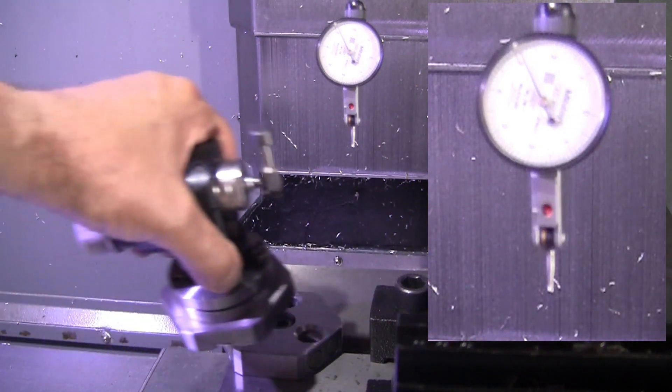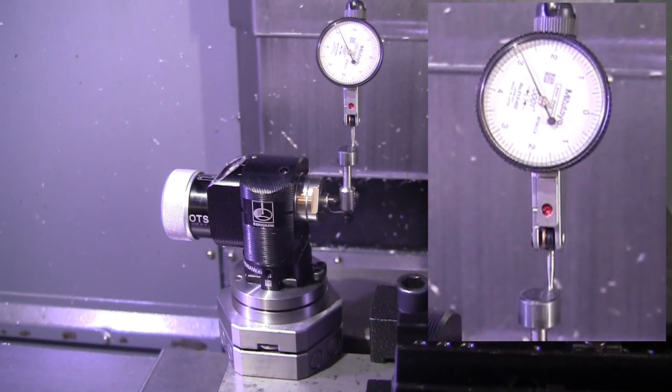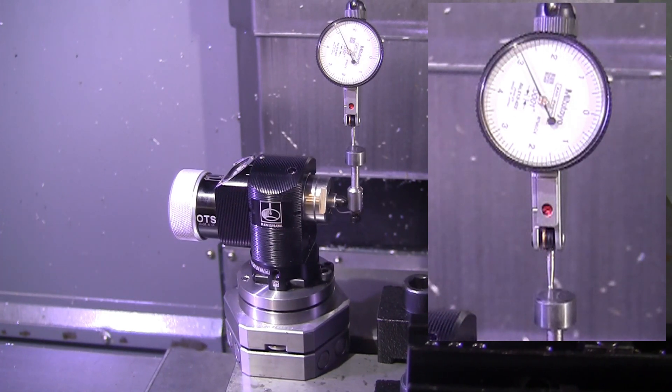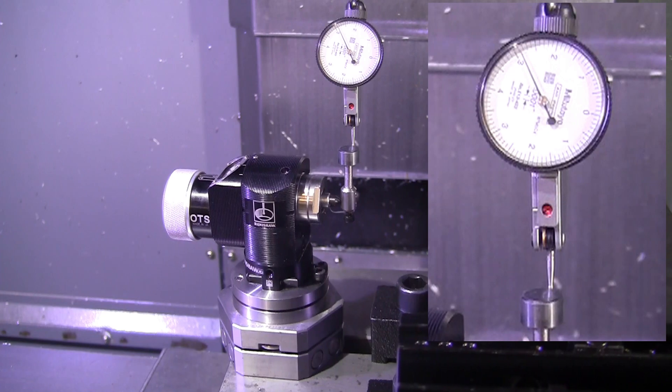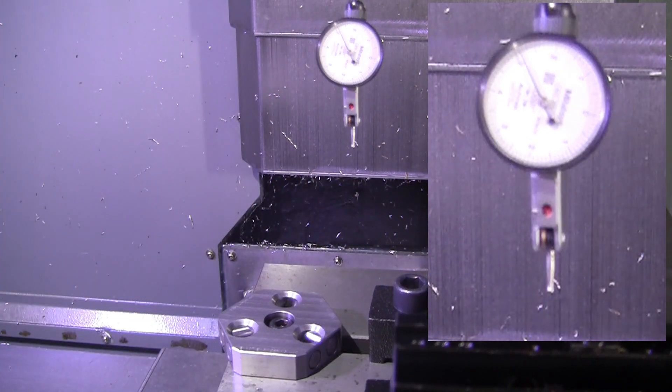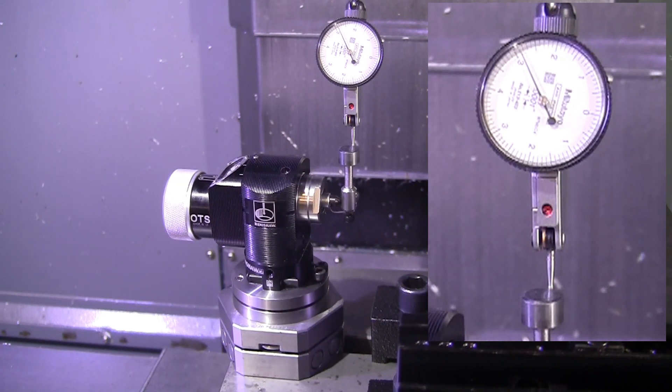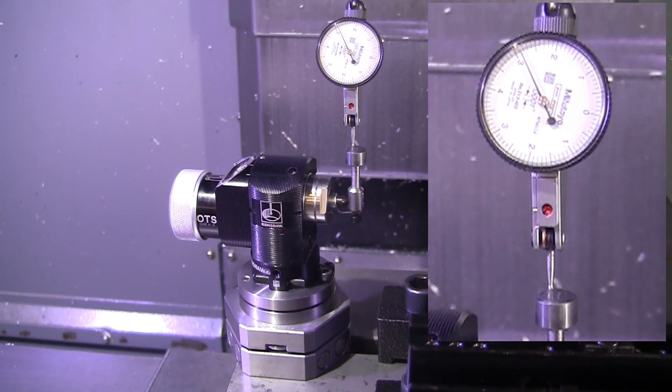The other advantage to the system is that puck that is bolted to the t-slot—that's the kinematic base. That can be placed anywhere in your machine: on top of a fourth axis, on top of a vice, wherever you want to bolt it down. Then once you calibrate the tool probe to that position, you can take it off and put it back on at will.